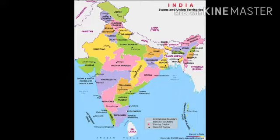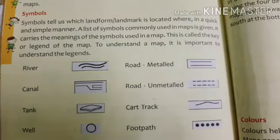People who draw maps are called cartographers. To read maps, we need to understand the meaning of different symbols that we can see on the maps.